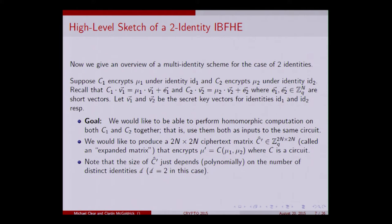We'll start with a warm-up construction to illustrate the approach. Our main goal is to allow evaluation on ciphertexts encrypted with different identities — for example, one message encrypted with ID 1 and another with ID 2. We want to run a circuit on both ciphertexts together and get the correct result. In this simple case, we aim to produce a 2n-by-2n matrix, which generalizes to dn-by-dn where d is the number of identities.